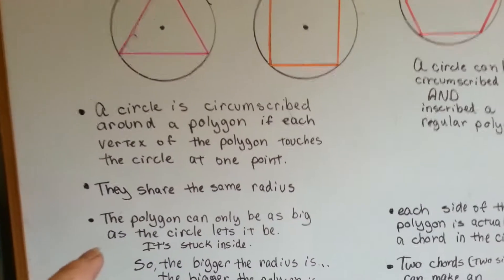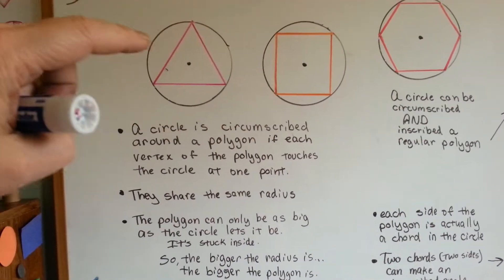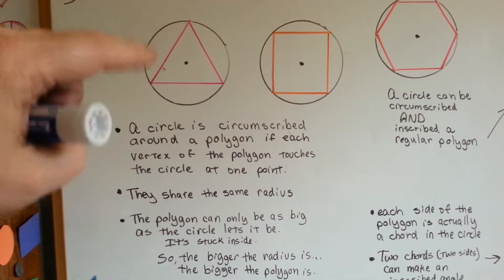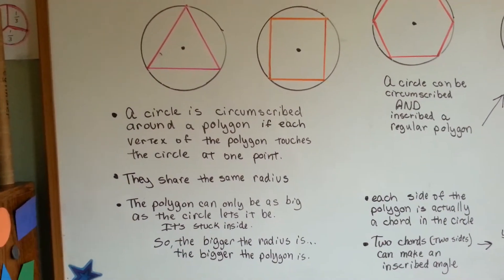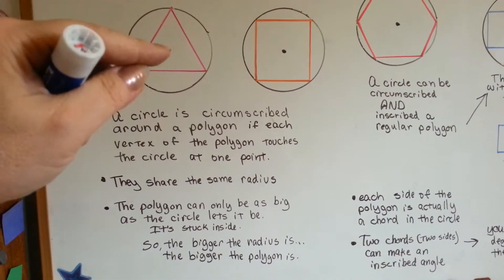The polygon can only be as big as the circle lets it be. This triangle can't be any bigger than the edges of this circle because it's stuck inside. So the bigger the radius is, the bigger the polygon is. Does that make sense?